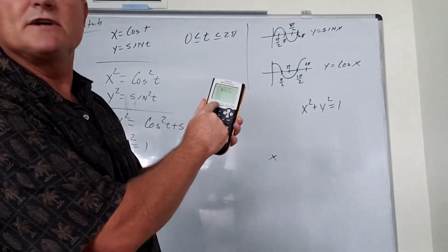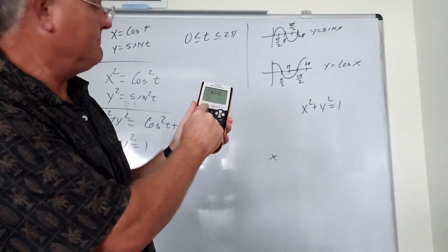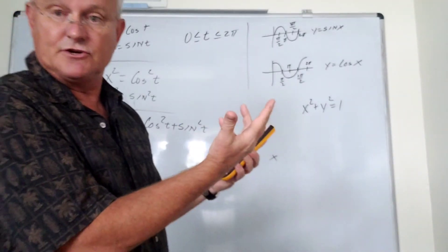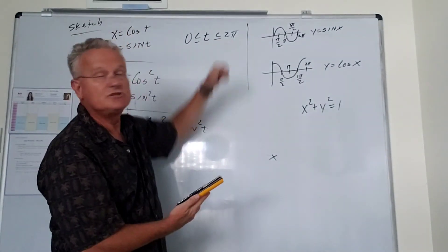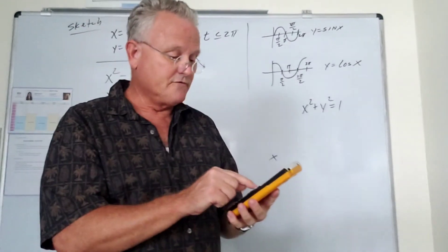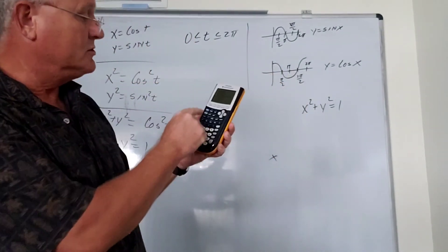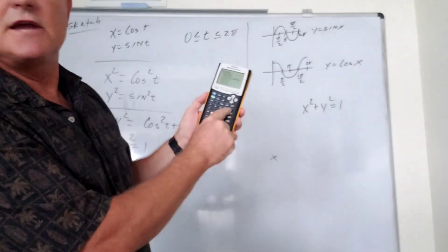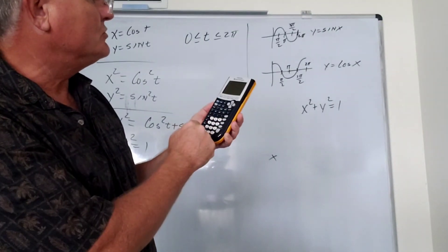So what we want to do is press the window key, and t min is 0, t max is 2 pi. So for t max, type in 2, and second, and right here is our pi, right above the caret key. So we get 2 pi. All right, let's just leave our step to be, my default is 0.13.